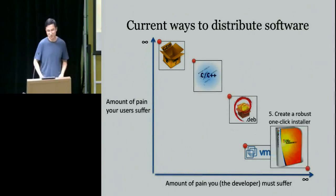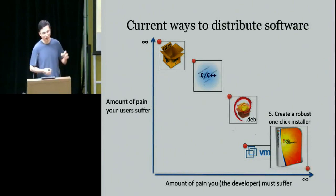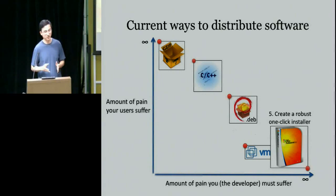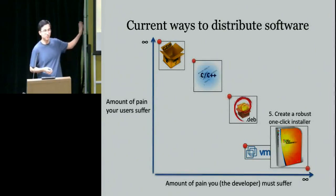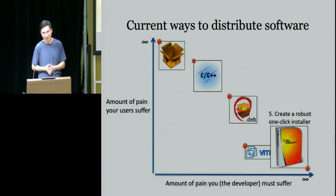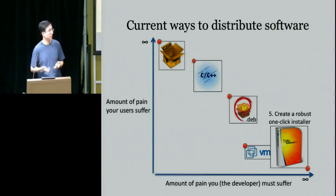The easiest thing for users is a robust one-click installer — the most pain for you but the easiest for users. They should just double-click and install. This is how commercial off-the-shelf software should work. Even then you have forms where people have trouble installing it, and companies creating software spend lots of effort and time QA-ing their installers.